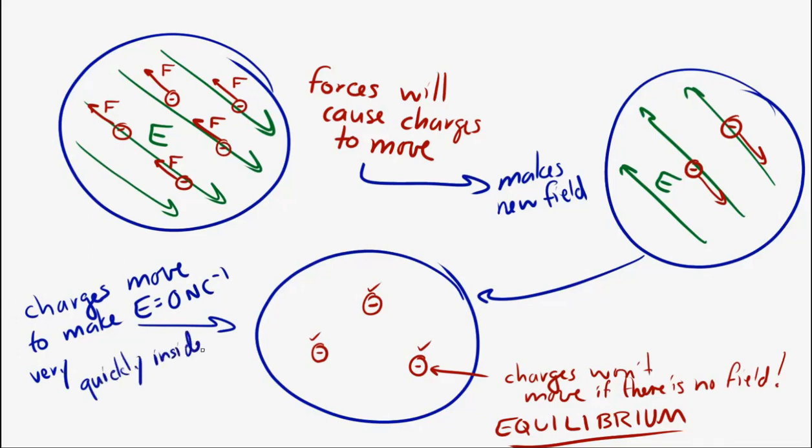Okay. So, I mentioned charges moving around inside of a conductor. That is given a name. When charges move or flow through a conductor, that's called a current. A current is the flow of charge.